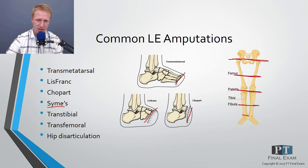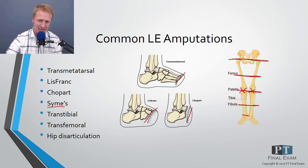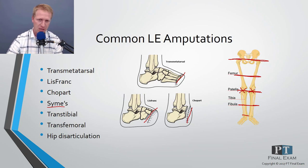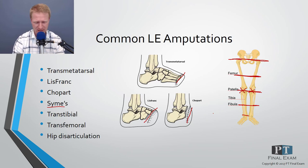The knee disarticulation is not done very commonly because they like to have the lever arm. If you disarticulate the knee, you don't have a good place to put the prosthetic knee joint. That's why they typically go transfemoral if needed, because then you have space for the socket and a knee joint to make it more functional.